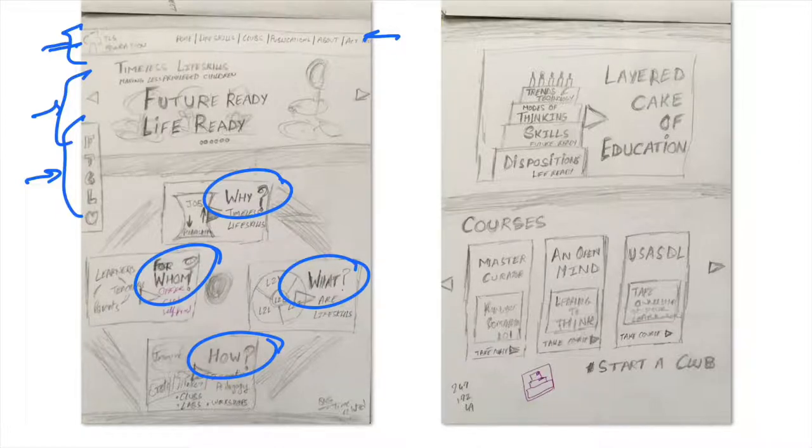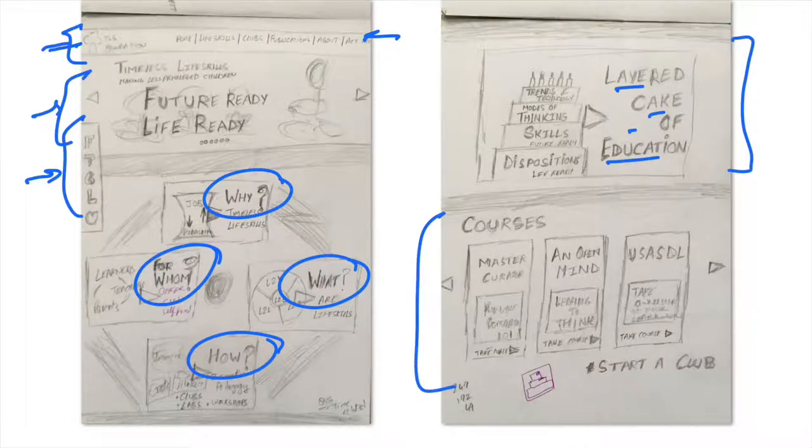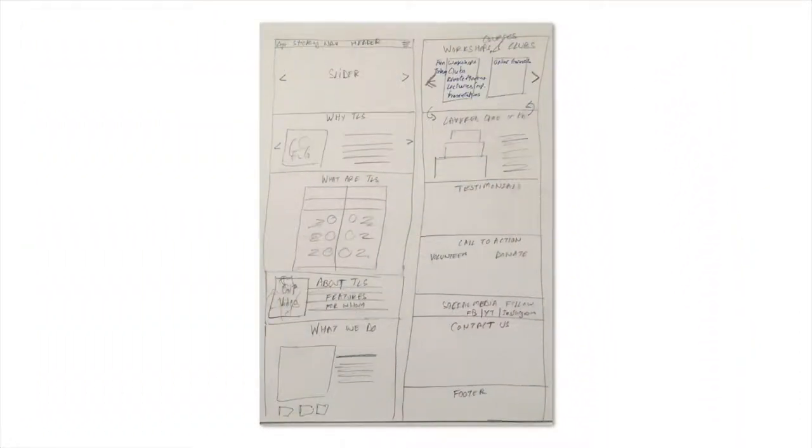Scrolling down further, there will be another section where we will define the pedagogy or the design approach that we follow. I will come back to this idea of a layered cake of education later. And then there will be a section on courses, where all the courses that we will create to help students and teachers run life skill clubs or learn life skills will appear—for example, this course that you are taking right now.